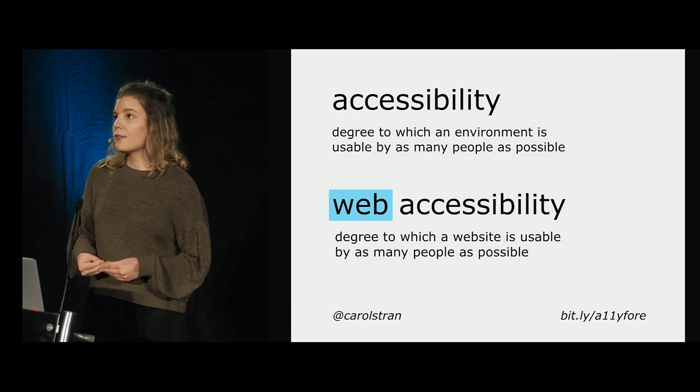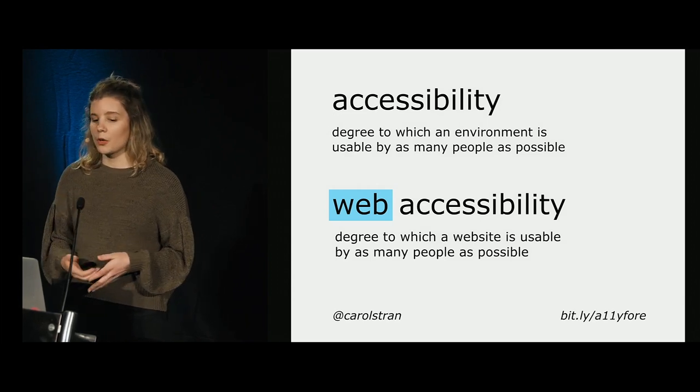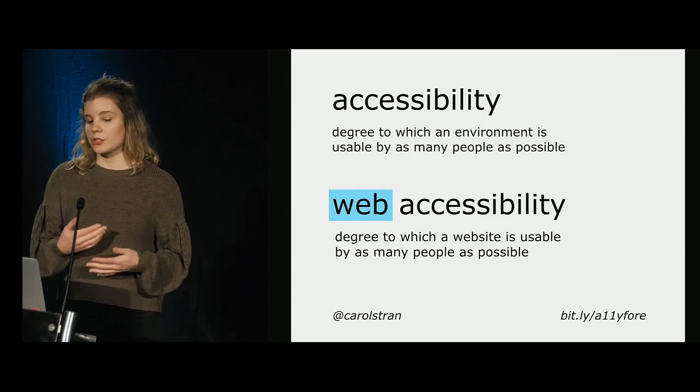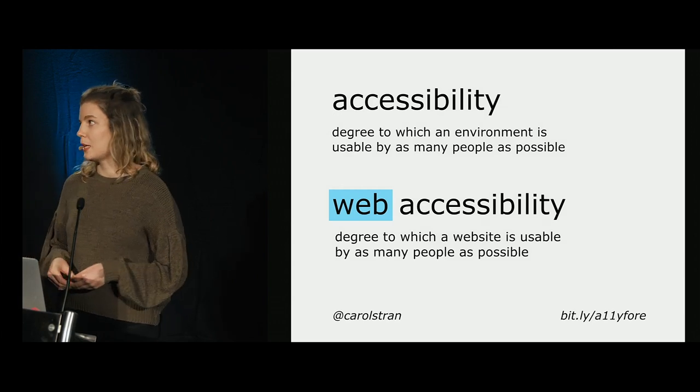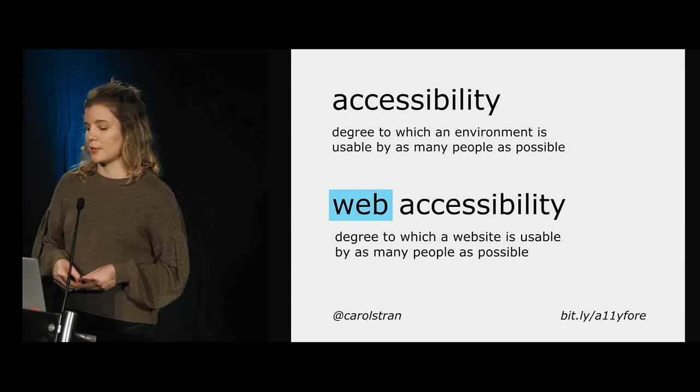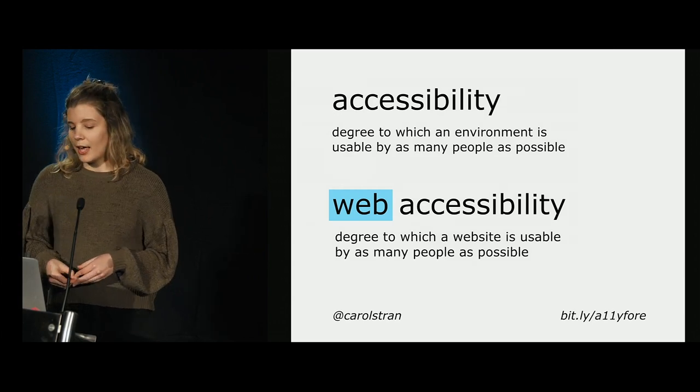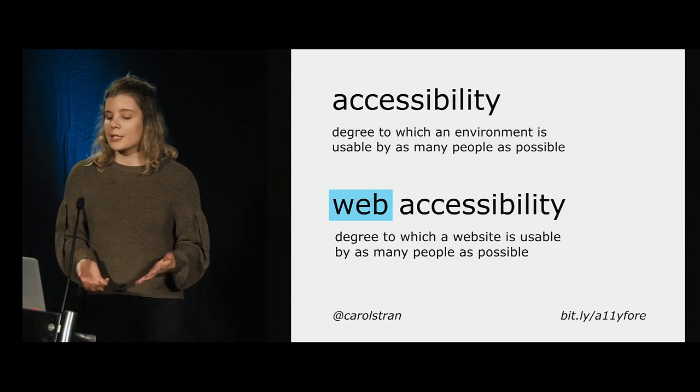Now that acronyms are out of the way, let's talk about what accessibility actually is. Laura Kalbag outlines this really well in her book, Accessibility for Everyone. She defines accessibility in the physical world as the degree to which an environment is usable by as many people as possible. And web accessibility is the degree to which websites are usable by as many people as possible.